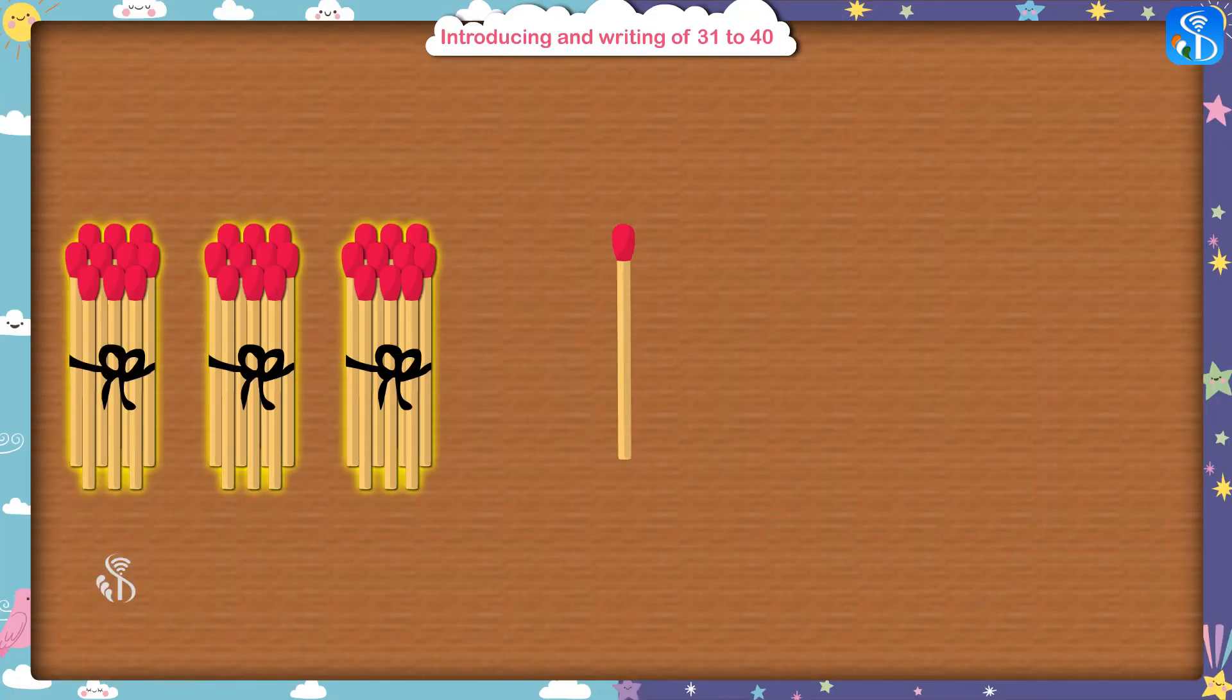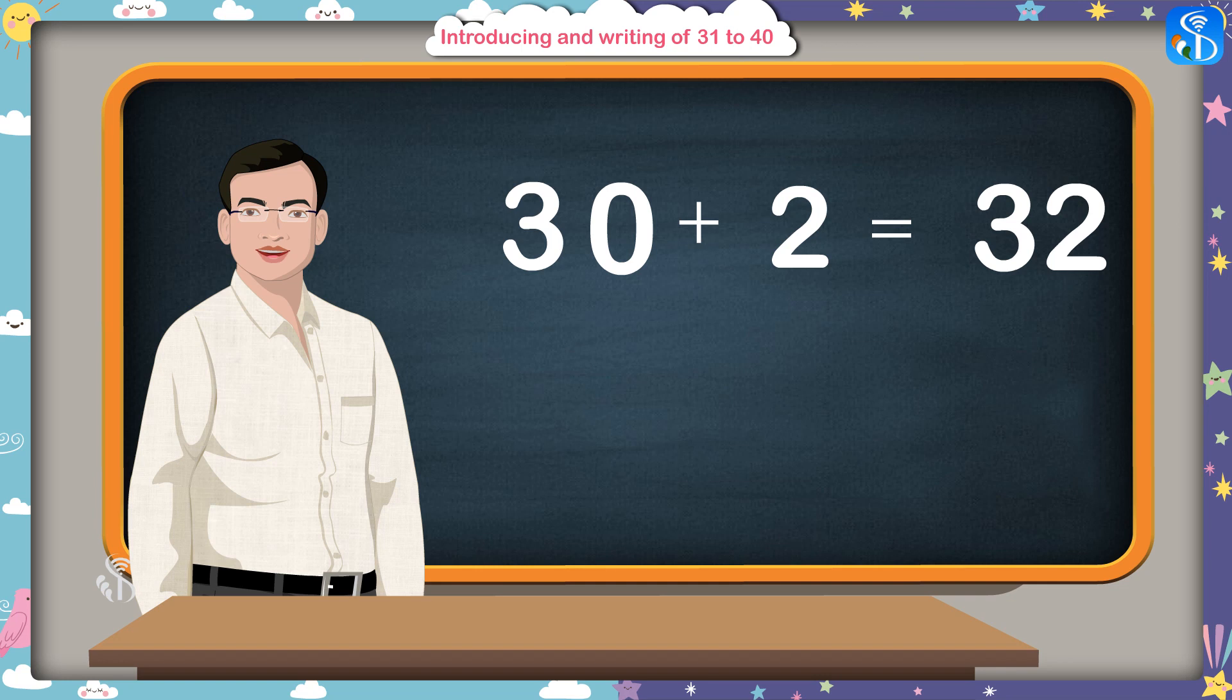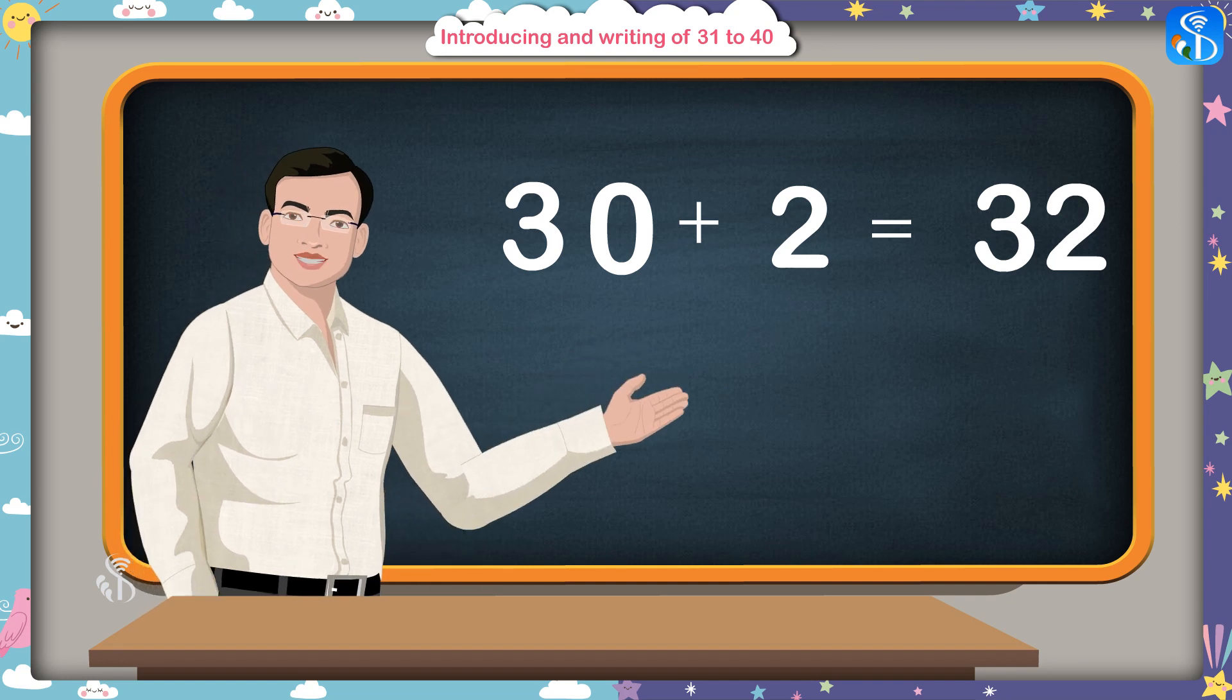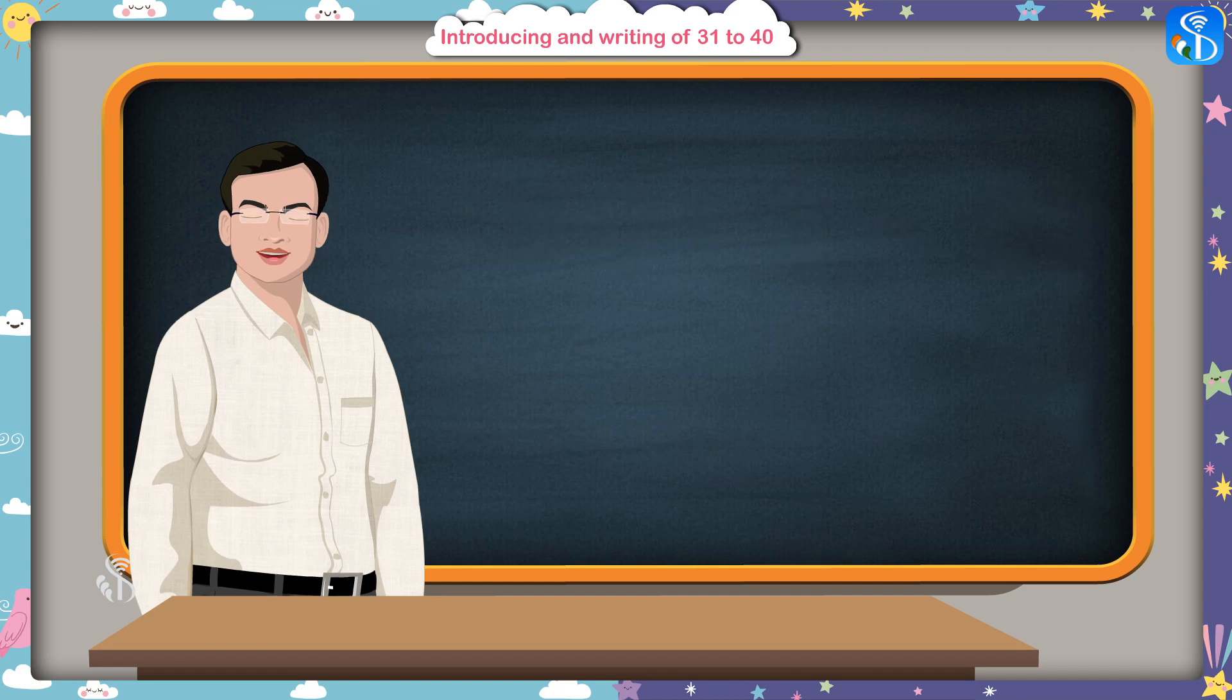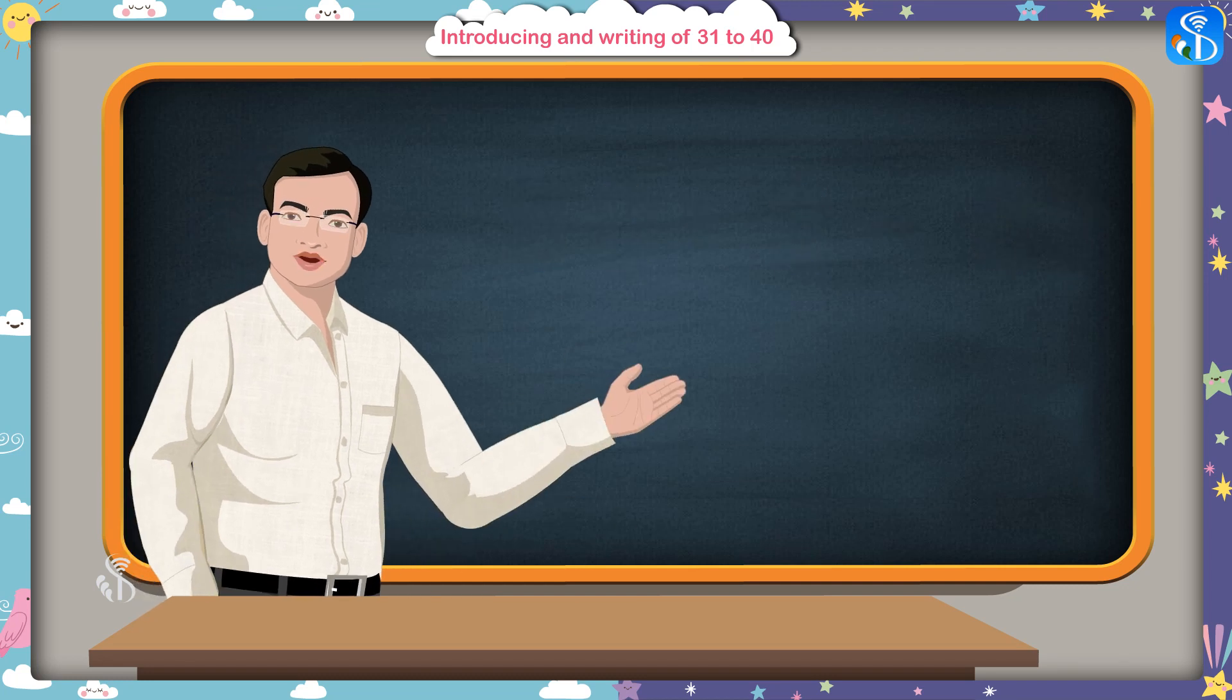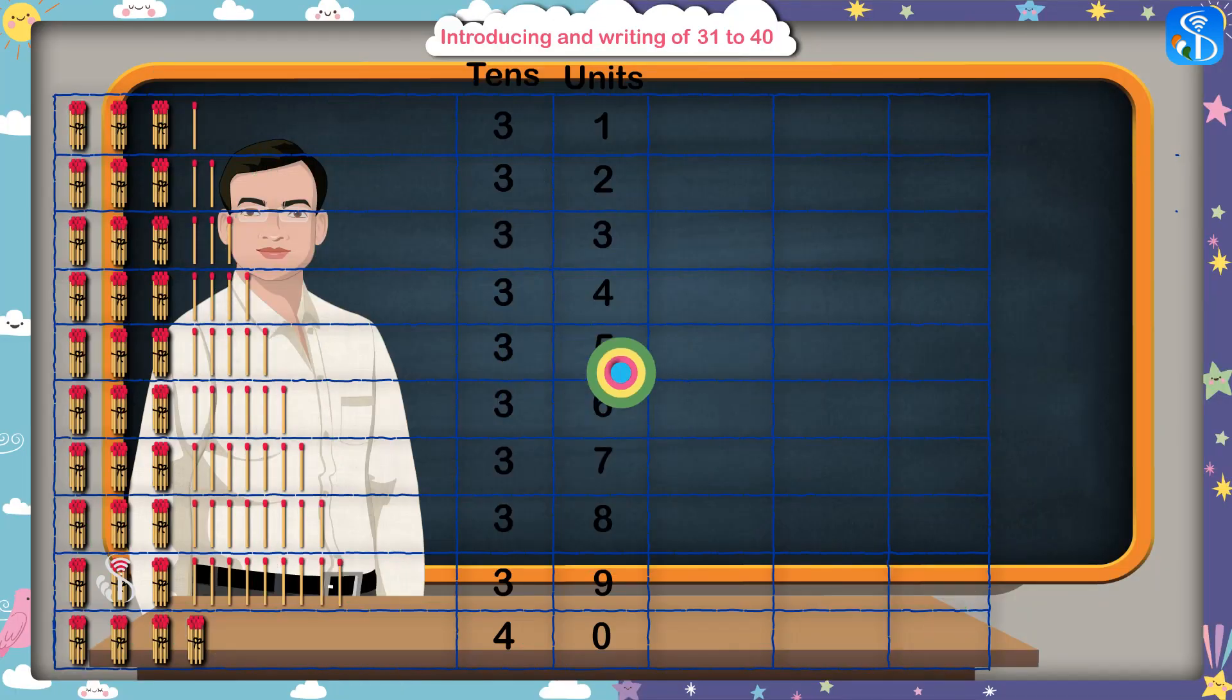Look here. I have placed three bundles and one single matchstick here. So these are thirty-one. Now I will add one more matchstick here. Together, these will be thirty-two matchsticks. Therefore, we can say, thirty and two together make thirty-two. In this way, we can go on adding one matchstick at a time. This will help us to identify the tens and units.